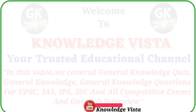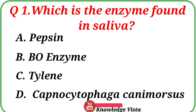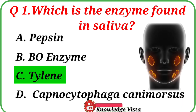Let's start this video. Question No. 1: Which is the enzyme found in saliva? Your options are: A. Pepsin, B. BO enzyme, C. Tylene, D. Capnocytophaga canimosis. Correct answer is Option C, Tylene.